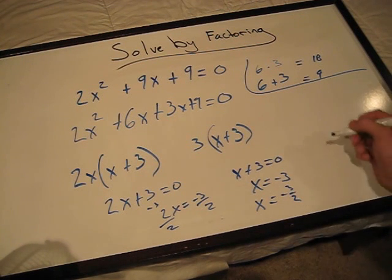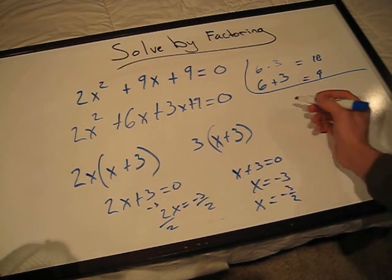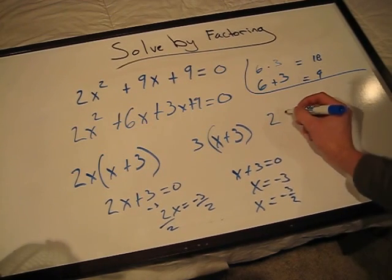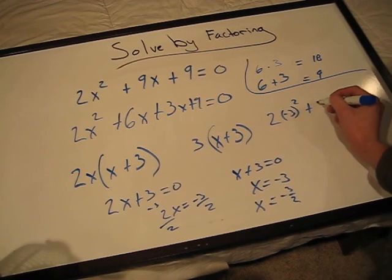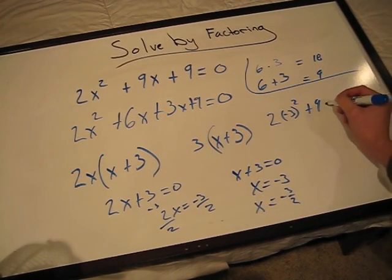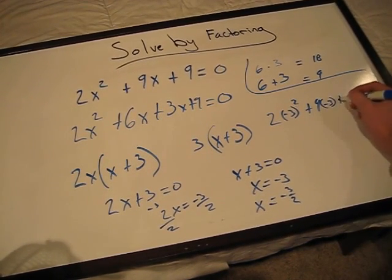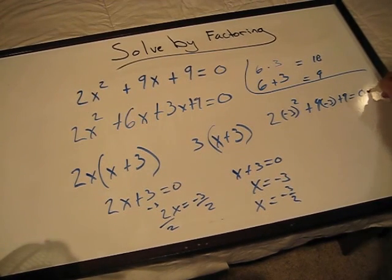We can throw these into a quick check, enter them into our original problem. 2 times negative 3 squared plus 9 times negative 3 plus 9 equals 0. That checks out.